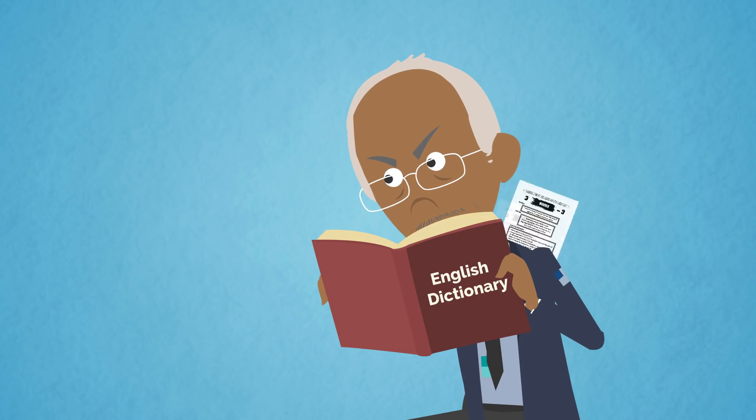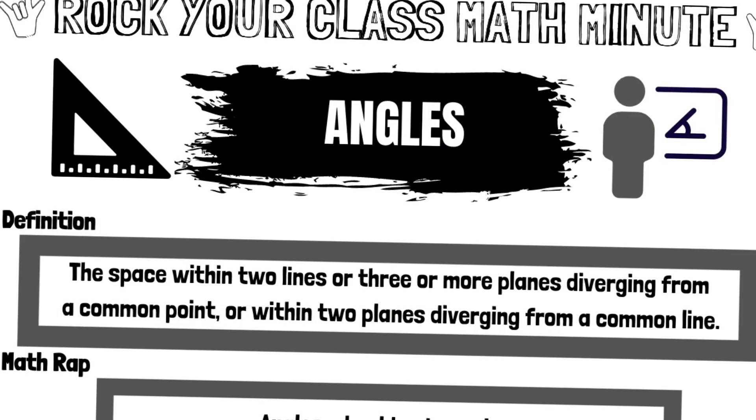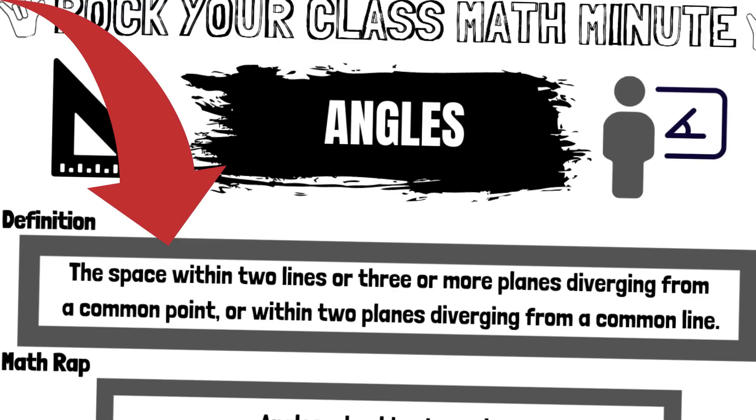What does the dictionary say? The space within two lines or three or more planes diverging from a common point, or within two planes diverging from a common line.